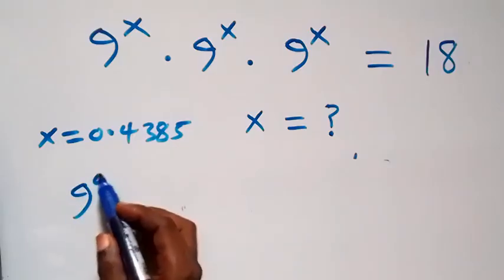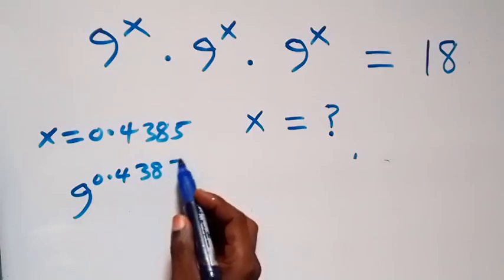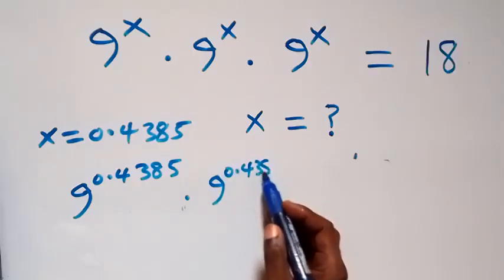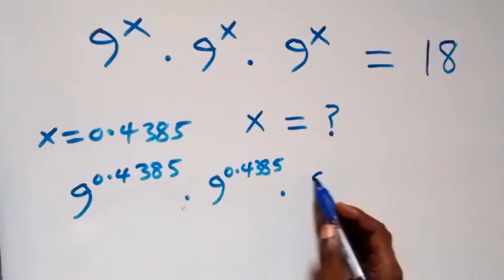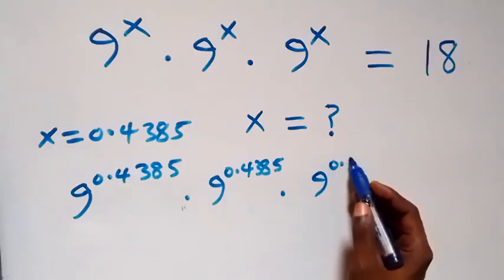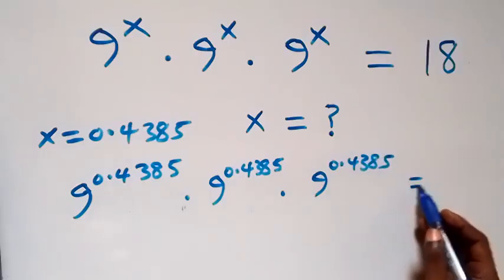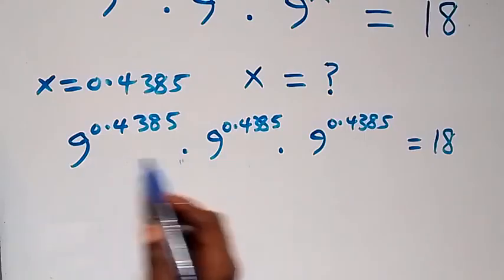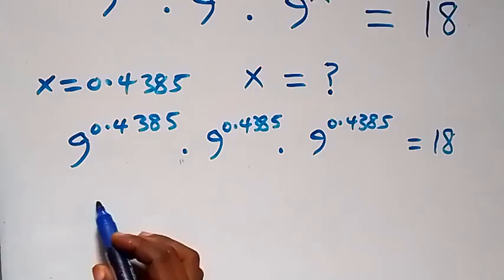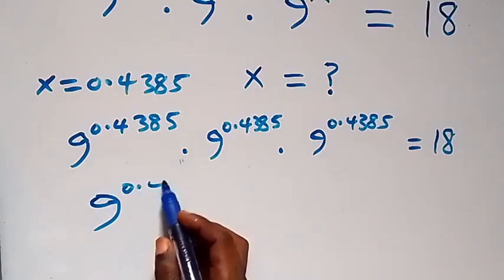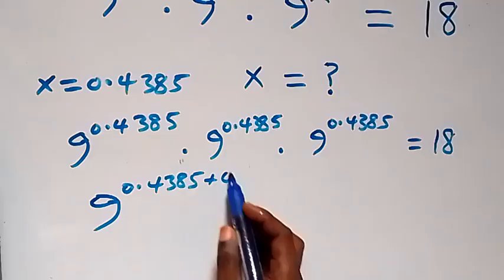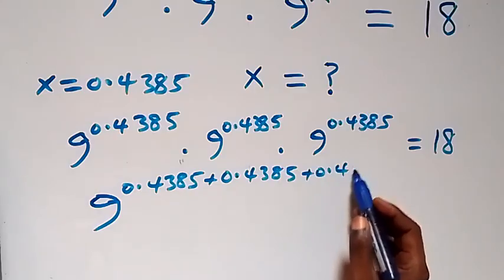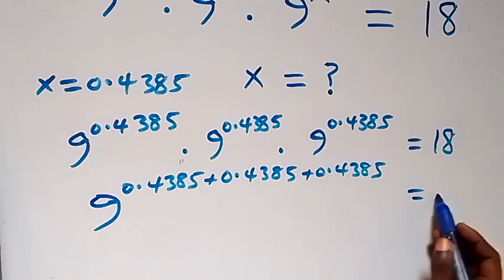Then here this becomes 9 raised to power 0.4385, times 9 raised to power 0.4385, times also 9 raised to power 0.4385. This gives us 9 raised to power 0.4385 plus 0.4385 plus 0.4385, which equals to 18.